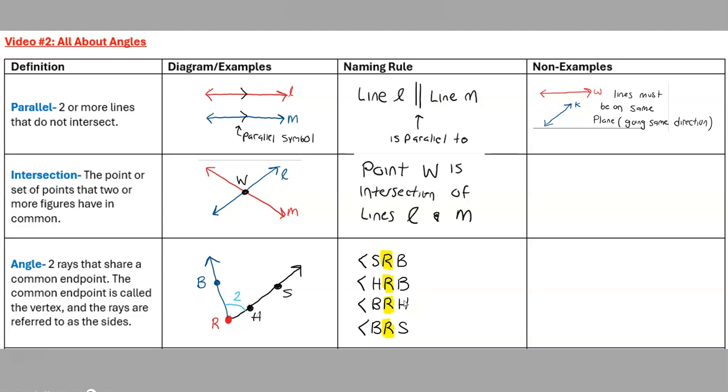Now instead of using points to label it, sometimes you will see in diagrams the arc symbol right here and you will see a two. Notice there's no degree symbol, so I'm not saying that this angle is two degrees. We'll talk about angle measures in a later video, but in this case we're going to call this angle two. If you don't have points, or sometimes the points will be drawn and we still for communication purposes put a number here, that's going to be our safe route in this situation.